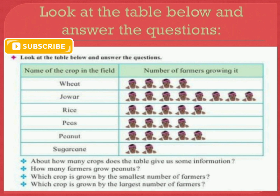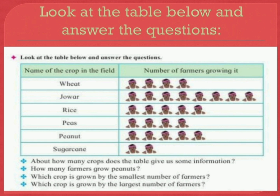Now let's solve the exercise. Look at the table below and answer the questions. In this table we have the name of the crop in the field and the number of farmers growing it. Question 1: About how many crops does the table give us information? 6 crops.